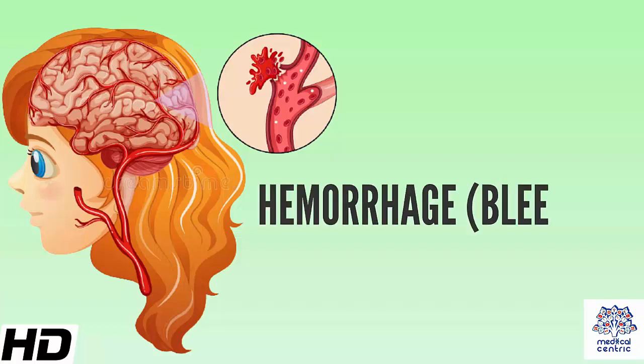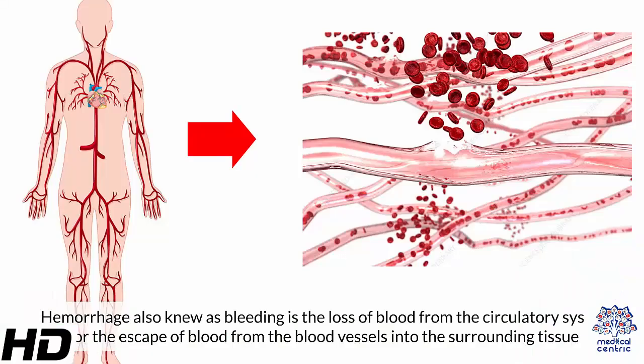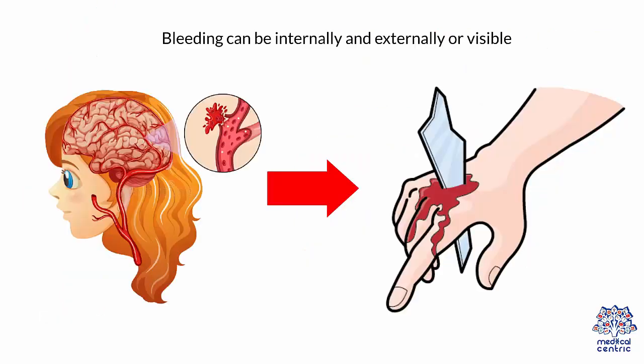Today's topic is hemorrhage, or bleeding. Hemorrhage, also known as bleeding, is the loss of blood from the circulatory system or the escape of blood from the blood vessels into the surrounding tissue. Bleeding can occur internally and externally, or be visible.